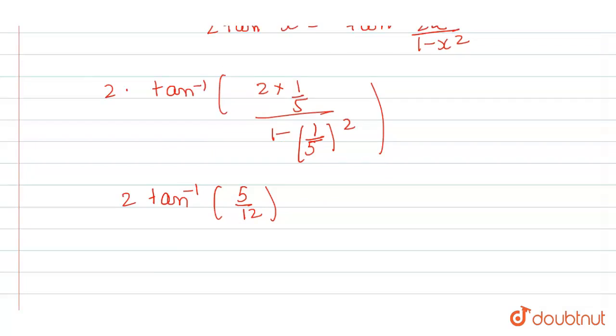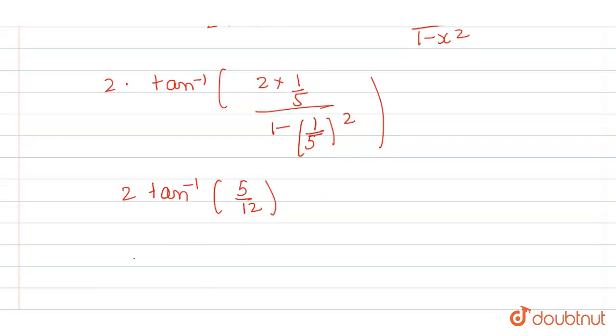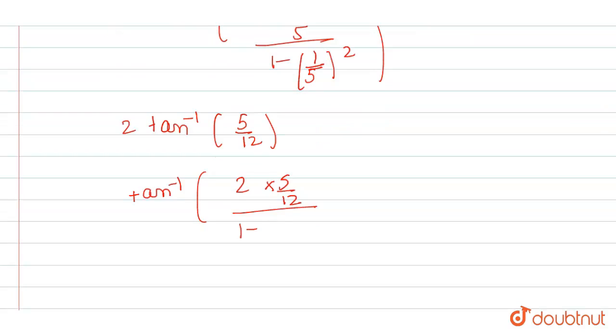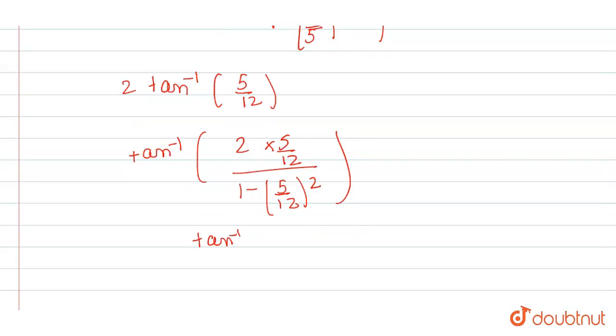Now, we will use again same formula here. It will become tan inverse of 2 into 5 by 12 divided by 1 minus 5 by 12 whole square. From here, we get value as tan inverse of 120 by 119.